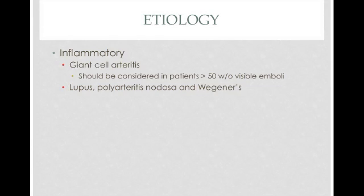As far as vasculitides go, giant cell arteritis is a big one that you want to make sure you rule out in all patients. It should be considered in patients who are less than 50 and you don't see an emboli on your fundoscopic exam. Other vasculitides to keep in mind are lupus, polyarteritis, and Wegener's.